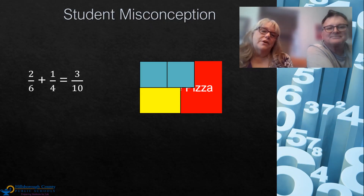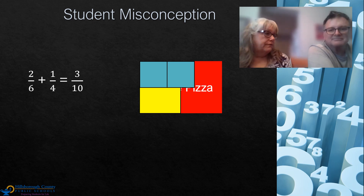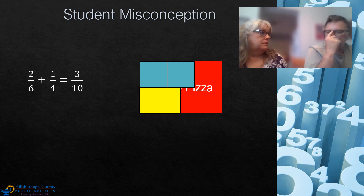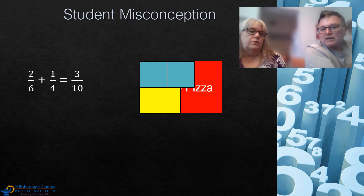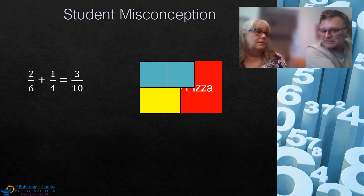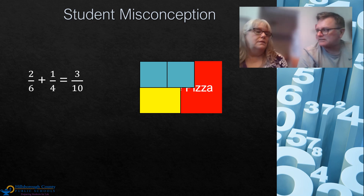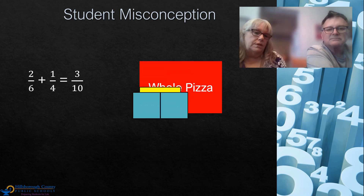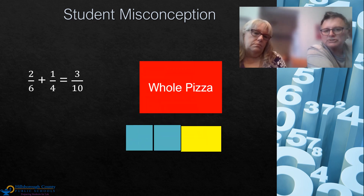There are many misconceptions when students are adding and subtracting fractions, but one of the most common is that they just take those numerators and add them together and take the denominators and add them together. I like to go back to the concrete models to prove that two-sixths and one-fourth does not equal three-tenths. Something I've always asked fifth graders is: when you look at your model, where do you see tenths in your model?